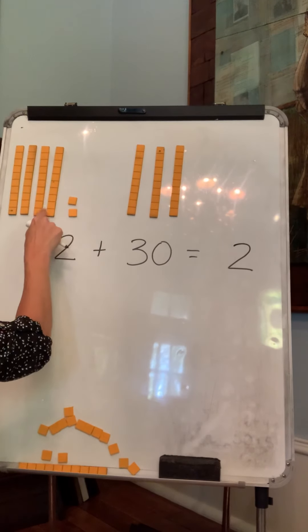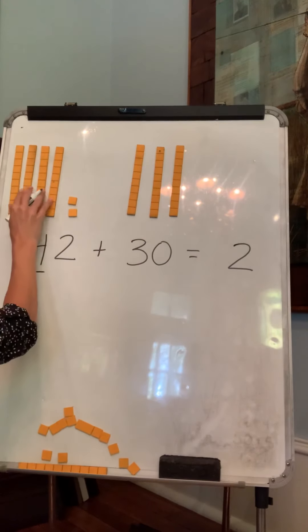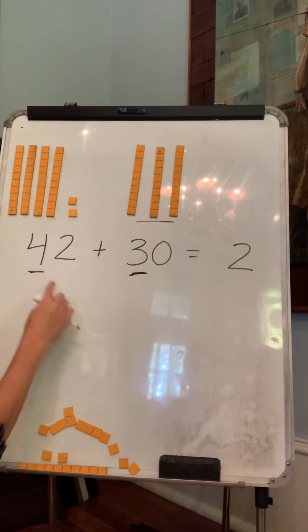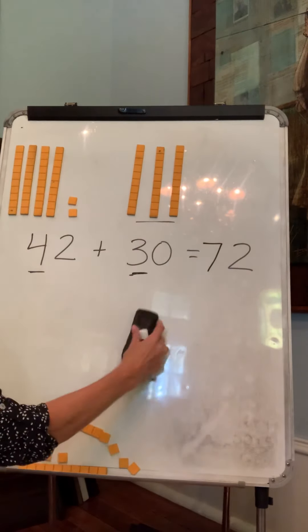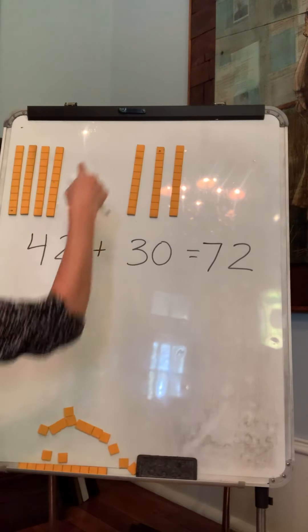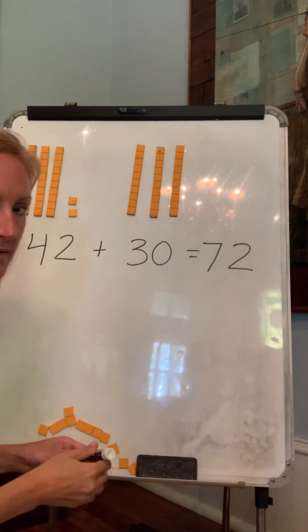One, two, three, four, five, six, seven. We have four tens over here plus three tens over here. Four plus three is seven. Seven. So all together, we have 72. Seven tens and two ones. Seven. Okay.